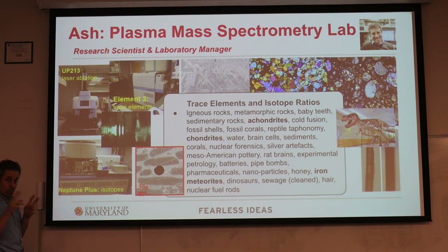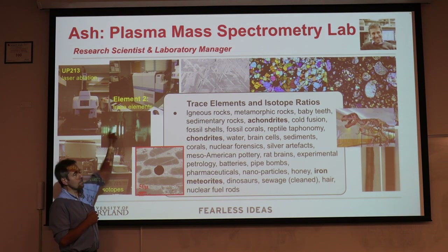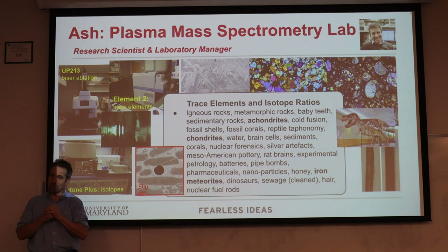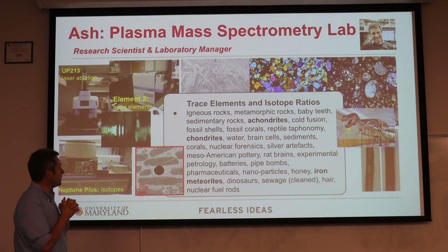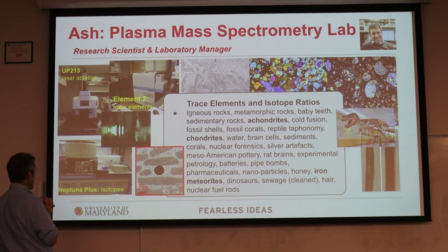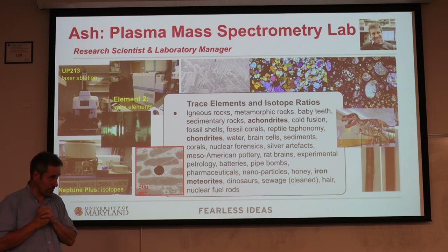We have two mass spectrometers. We have one here, which is the Element 2, which is used for measuring element abundances, and a Neptune Plus, which is used for measuring isotope ratios.